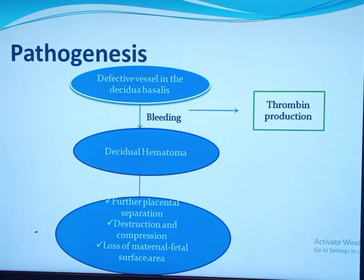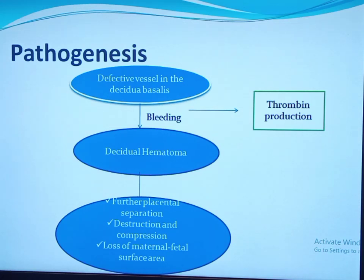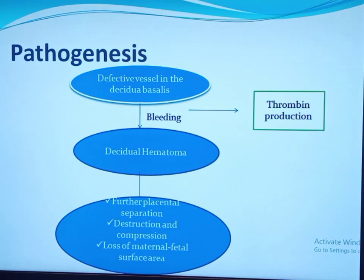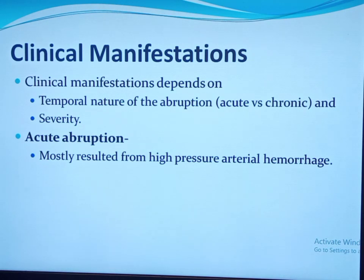The second pathway: decidual hemorrhage causes hypoxia, which stimulates vascular endothelial growth factor production, leading to tissue factor expression and thrombin production. Thrombin acts as a potent direct uterotonic agent and causes functional progesterone withdrawal, resulting in uterine contractions and further placental separation. Thrombin also upregulates matrix metalloproteinase production, increases cytokine production, upregulates genes involved in apoptosis, and triggers consumptive coagulopathy — playing a central role in the cyclic pathogenic events of placental abruption.